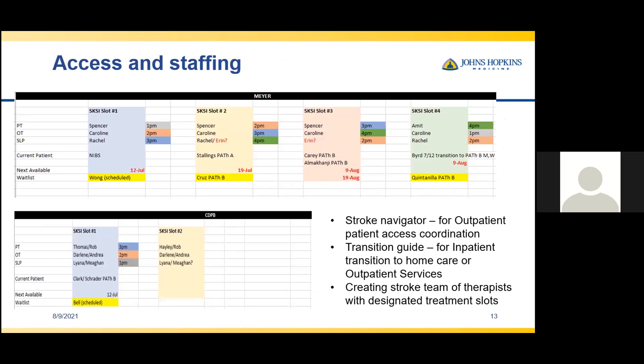In order to create appropriate access in a timely fashion, key roles were created to assist in solving our access challenges. We also had to change how we schedule these patients to ensure consistent continuity of care. Each role created included a stroke navigator for outpatient access coordination, where the inpatient care team notifies the navigator of all potential discharges needing outpatient care. She will then facilitate the scheduling of these patients to the necessary paths. She also works closely with the transition guide, as patients may be transitioned to home services first before being ready to come to outpatient.